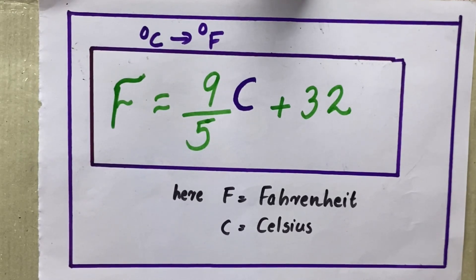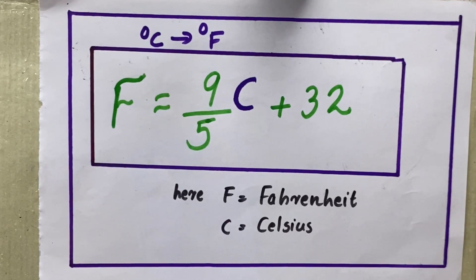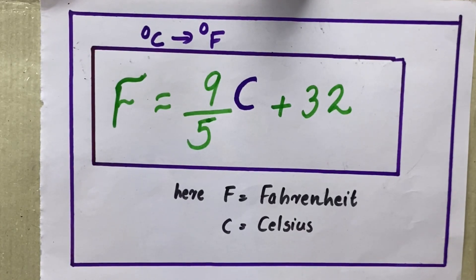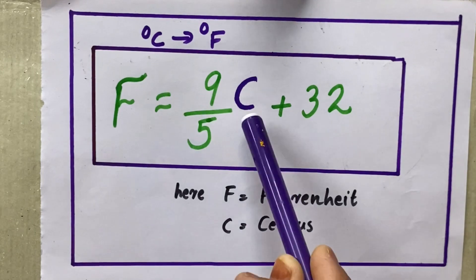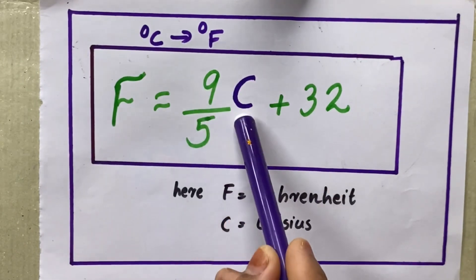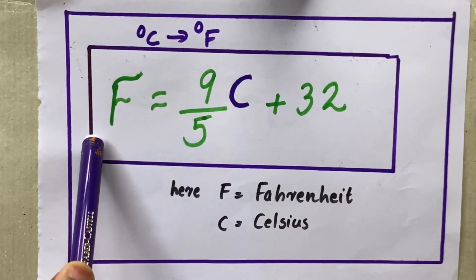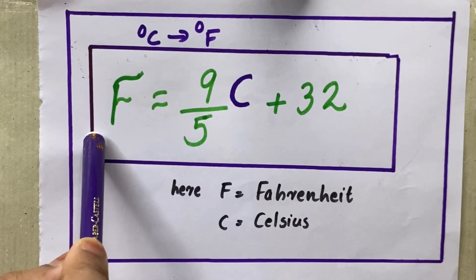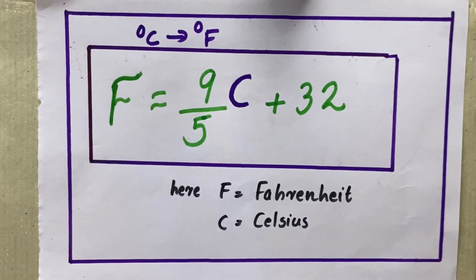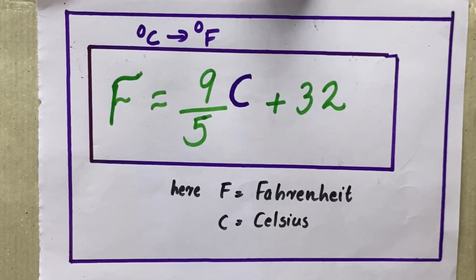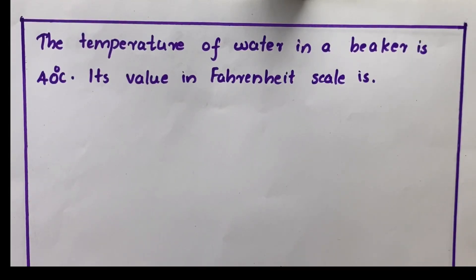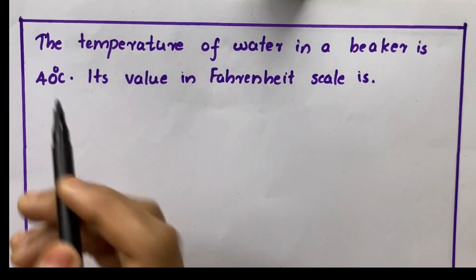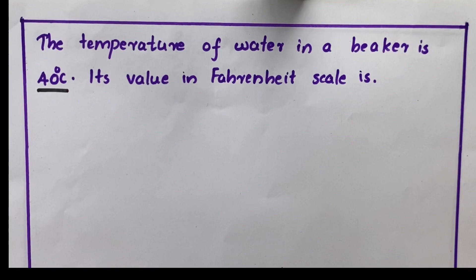If you want to convert degree Celsius to Fahrenheit, for example 10 degree Celsius is given, so we have to put that value 10 over here, then we will get it in degree Celsius. Can we check? Just before that, please take your pen and paper and do with me. Our first question is the temperature of water in a beaker is 40 degree Celsius.